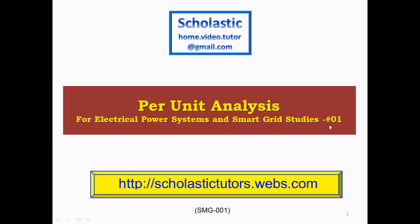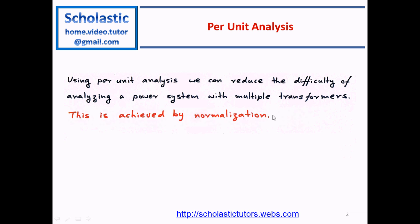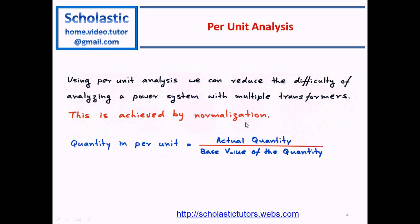Using per unit analysis, we can reduce the difficulty of analyzing a power system with multiple transformers. This is achieved by normalization. The definition of per unit quantity is: per unit equals actual quantity divided by the base value of the quantity.